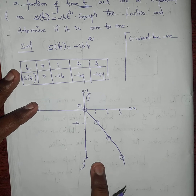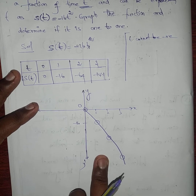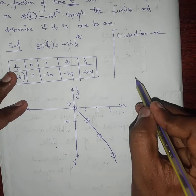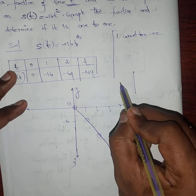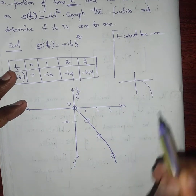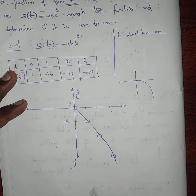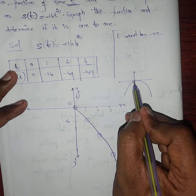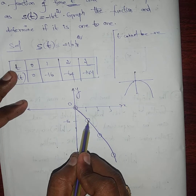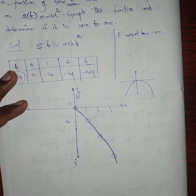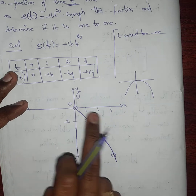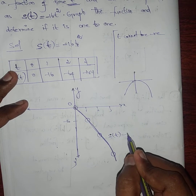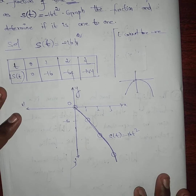If plotted properly, this is not a straight line — it is a parabola. The full curve would be a full parabola, but since t cannot be negative, we draw only a half parabola. So the graph of s(t) = -16t² is a half parabola.